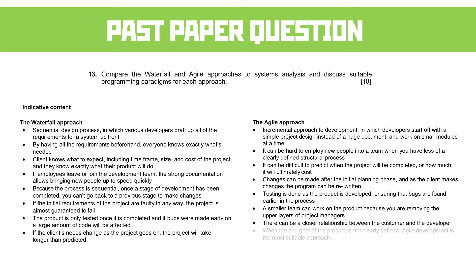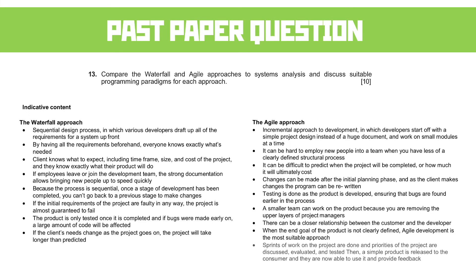There tends to be a closer relationship between the customer and the developer, because we're more often coming to the customer and saying 'here's where we are — what do you think, how can we improve it, what are the next steps?' If the end goal is not clearly defined, Agile is the most suitable approach because it gives the opportunity to change and update as we go. Sprints of work are done, priorities are discussed, evaluated and tested, then a simple product is released to the consumer for feedback. It's that iterative looping prototype methodology — spend a couple of days coding, hand over a working version, get feedback, go into another sprint, and repeat — that works to improve the quality of the software.